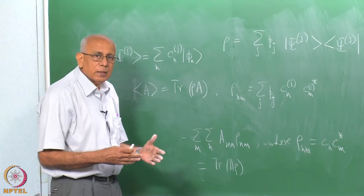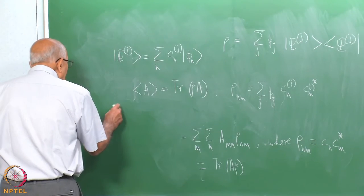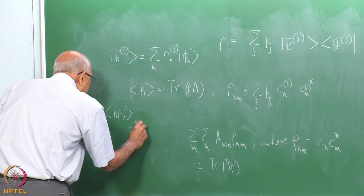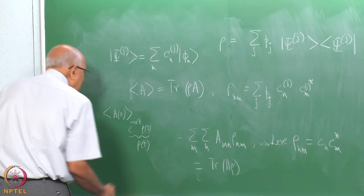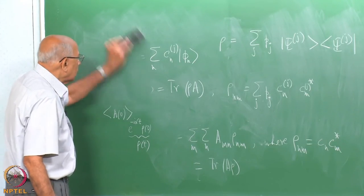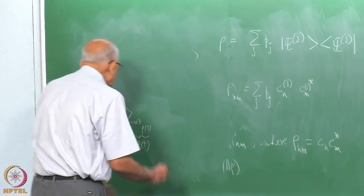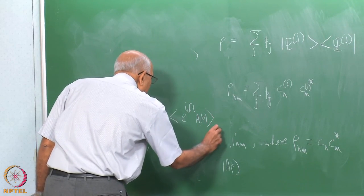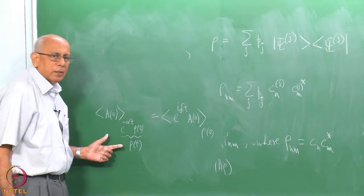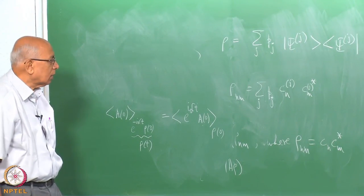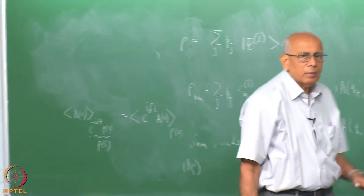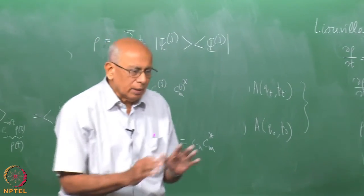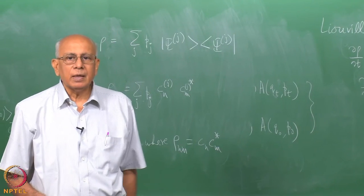The equivalence between the Schrödinger and Heisenberg pictures is expressed as: either compute Tr(A(0) · e^(−iLt) ρ(0)) or equivalently Tr(e^(iLt) A(0) · ρ(0)) — the two are related by unitary transformation. This puts both classical and quantum mechanics formally on the same footing for time evolution. Next time we will take up what happens when you introduce the Liouville operator in the presence of a perturbation, which will be the content of linear response theory.